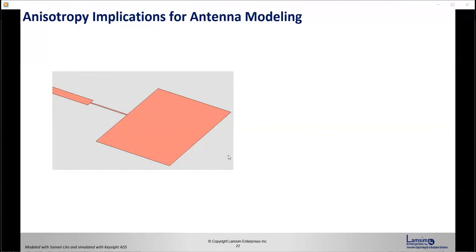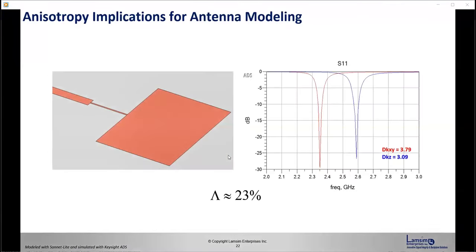Here's a similar anisotropic implication for antenna modeling. If we use DKxy to tune the model as shown in red, but when built the actual DK shifts, you see a shift in the resonant null. With 23% anisotropy in the material, your antenna design could be out of spec if you use the wrong DK.